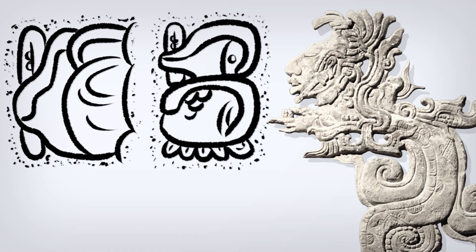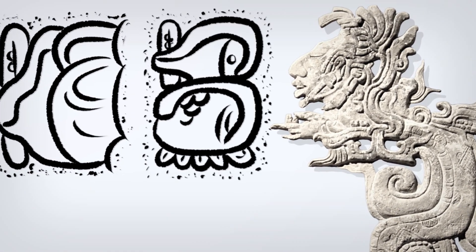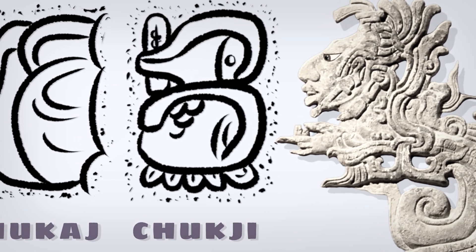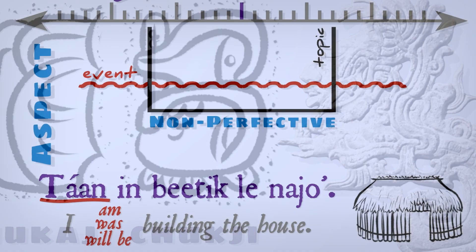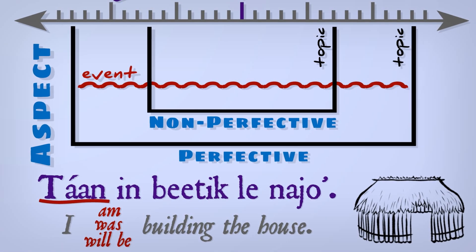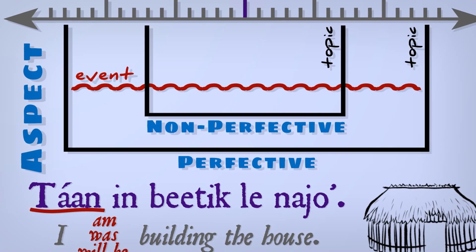A reference point, like, well, look back at those classic stair-step glyphs that spell the word chuki. It's a perfective. And perfectives set events. They place the entire event time inside the topic time.